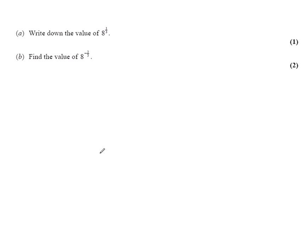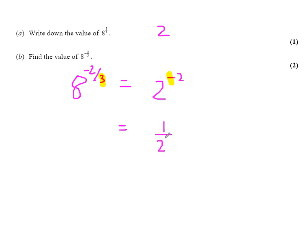Here's another exam question — have a go yourself. The question says: write down the value of 8 to the power of 1 third. The power of 1 third means cube root, so the cube root of 8 is 2. Part B: find the value of 8 to the power of minus 2 thirds. First, the cube root of 8 is 2, so we have 2 to the power of minus 2. The minus means 1 over, giving 1 over 2 squared. Since 2 squared is 4, the answer is 1 over 4.